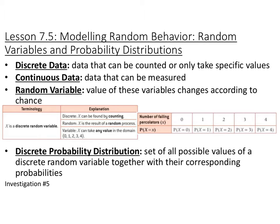Lesson 7.5. We're moving away from calculating strict probabilities to now modeling random behavior using random variables and probability distributions. So we're going to start talking about different types of probability distributions.